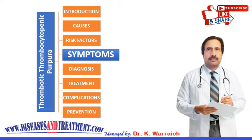You might also have tiny red or purple spots that look like a rash. Your skin may turn yellowish, which is called jaundice, or look pale. Other symptoms include fever, fatigue, confusion, weakness, and headaches. In serious cases, a stroke, major internal bleeding, or coma can also occur.